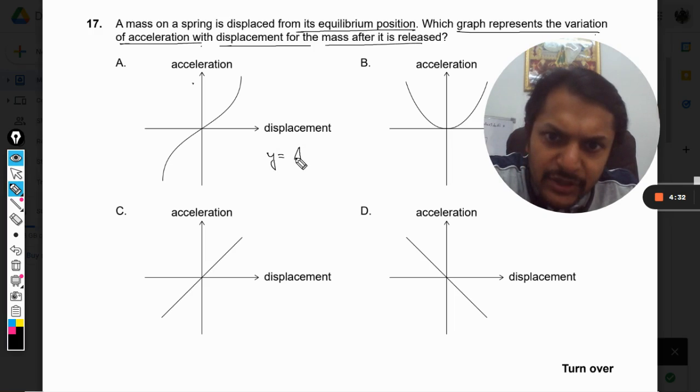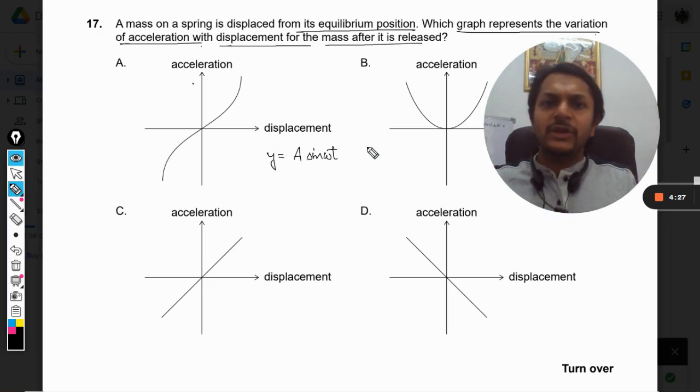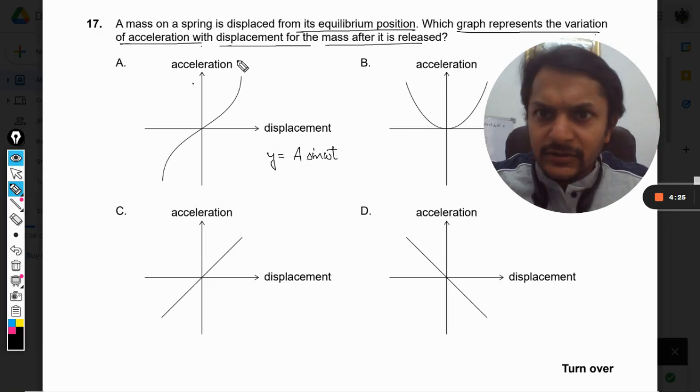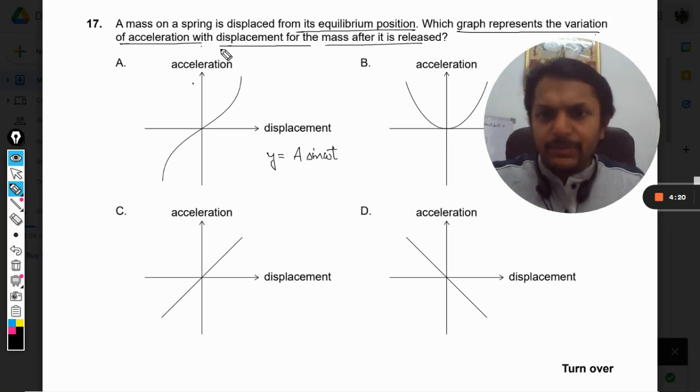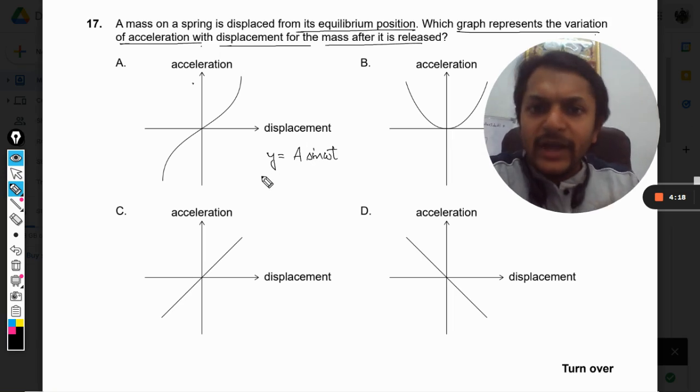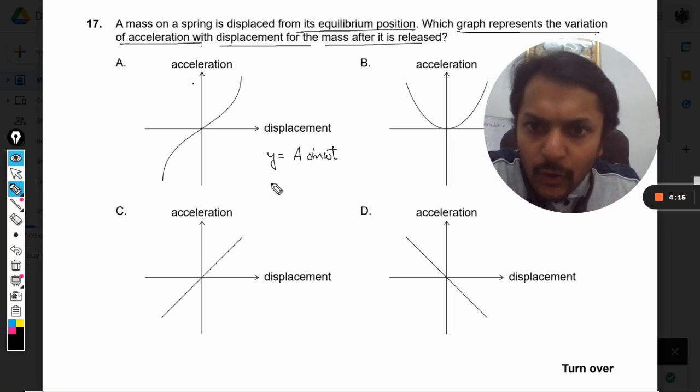First of all, let us choose an example for simple harmonic motion. So it is y equals a sine omega t, because the spring would be having simple harmonic motion anyways.